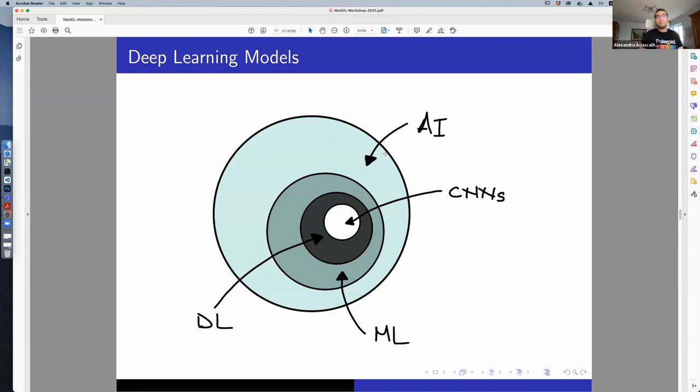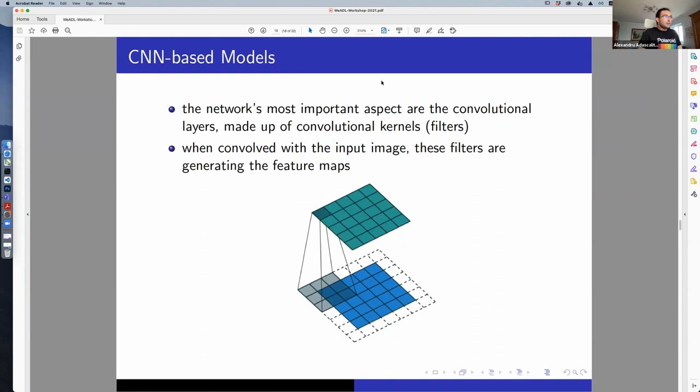Going into the deep part of the presentation, I want to explain to those not often working with convolutional neural networks where they are situated. You have the entire artificial intelligence domain. Then you want to deal with specific tasks that ask of you to map something to something else and solve your problem. That's machine learning. Then you have deep learning. The problem gets really complicated. And then you have convolutional neural networks where the job is really specific.